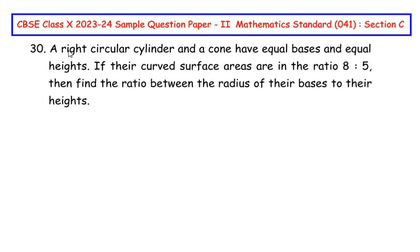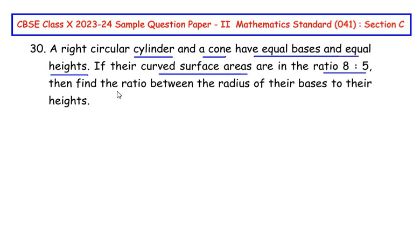A right circular cylinder and a cone have equal bases and equal heights. If their curved surface areas are in the ratio 8:5, then find the ratio between the radius of their bases to their heights. Let us try to understand the question by considering a rough figure first.